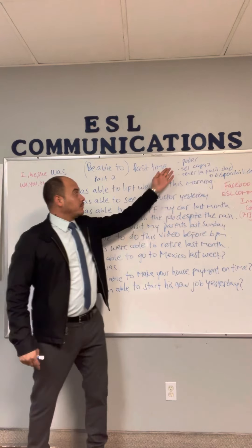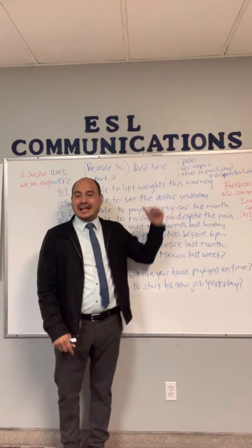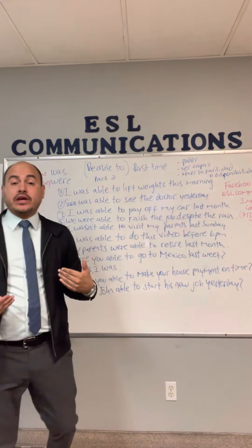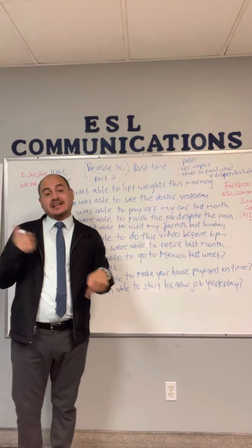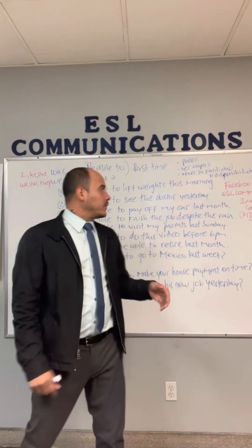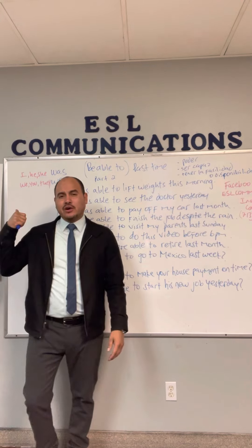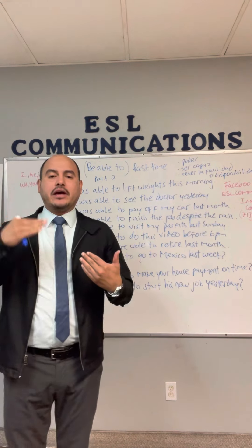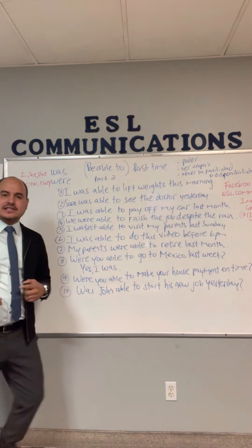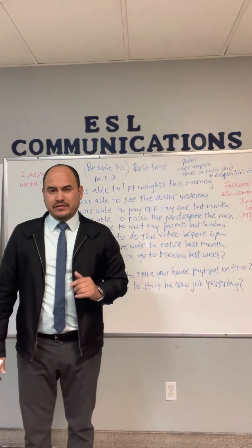'Able' se refiere al adjetivo poder — poder, ser capaz de hacer las cosas, tener las facilidades o la disponibilidad de las cosas. Today we're going to go over the past tense. Vamos a ver el pasado. Siempre recuerda que 'be able to' se usa con el verbo 'to be.' El video anterior lo hicimos con el presente: am, is, are able to. Hoy lo vamos a hacer en el pasado.